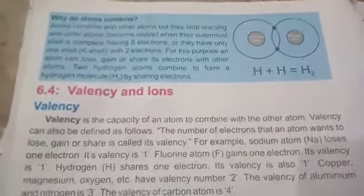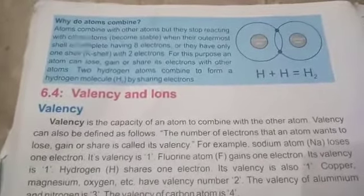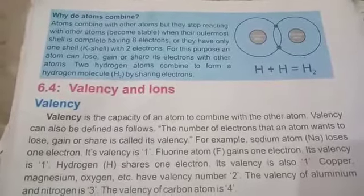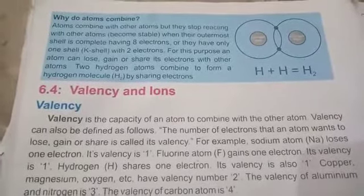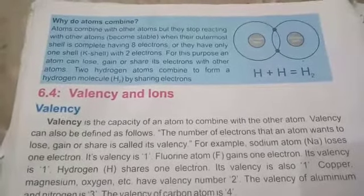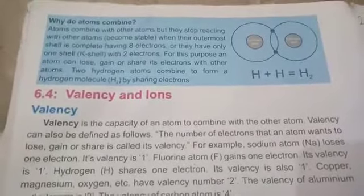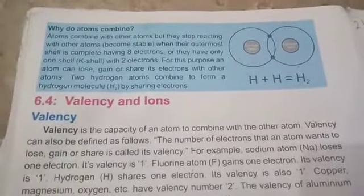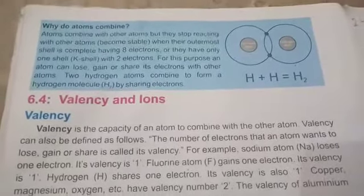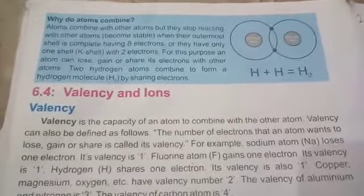Actually, the atom is the smallest particle that cannot exist independently, so atoms react with each other to become stable. For this purpose, they have to complete their outermost shell or valence shell, having eight electrons — or two electrons in the case of the K shell. For this purpose, atoms lose, gain, or share electrons with other atoms.